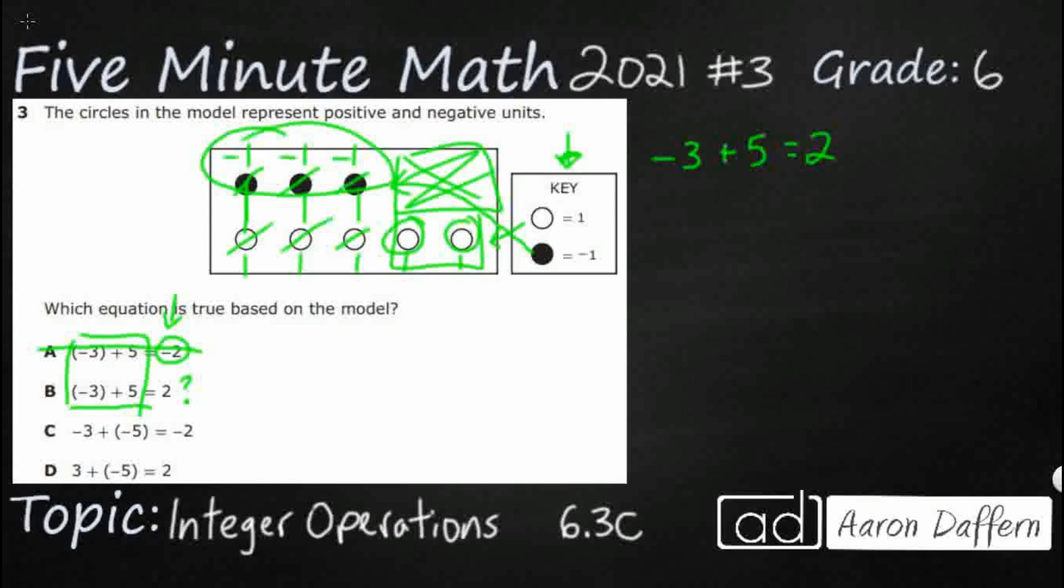So C actually looks different. It's got a negative three. So that would be three closed dots. And then it's got negative five. So now it's got five closed dots. And they say that's supposed to equal negative two. Actually, that would equal negative eight. Because if they're all negatives, that's one, two, three, four, five, six, seven, eight. So it's this negative right here. It's the wrong sign there. It's a negative, it should be a positive. That's going to mess up your C.